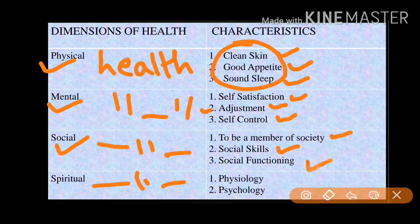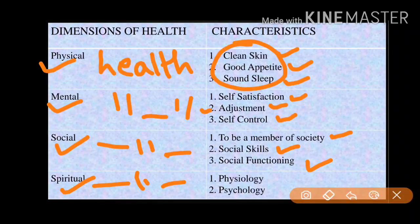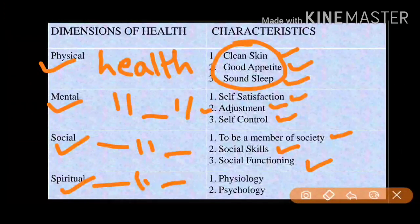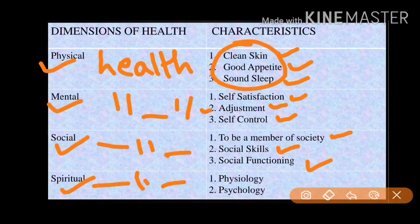An example of social health is participating in another community's festival celebrations even if you are not from that community. The last dimension is spiritual health. Spiritually healthy means your body and mind are at peace and in harmony. You should practice yoga and meditation. Spiritual health does not only relate to religion — it is about having a perspective of being at peace.